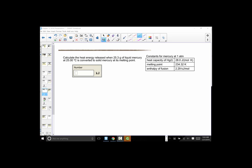Here's a homework question from Chapter 12 in our sapling asking us to calculate the heat energy released when 25.3 grams of liquid mercury at 25 Celsius is converted into solid mercury at its melting point.